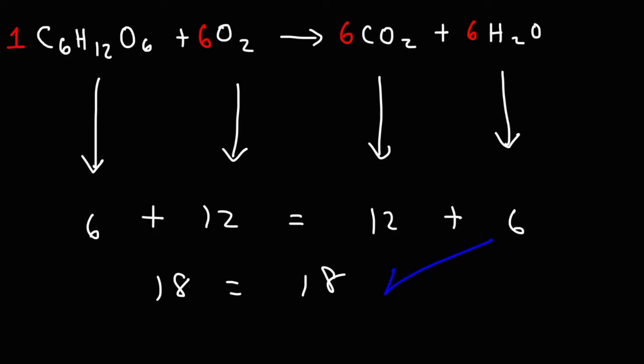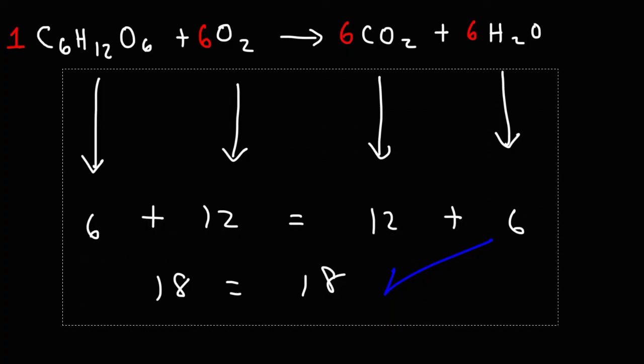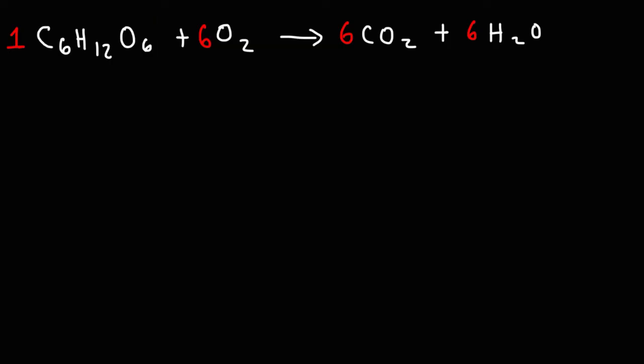That's one of the most effective ways to balance combustion reactions. First, balance the carbon atoms. Second, balance the hydrogen atoms. And then third, balance the oxygen atoms last. If you do it in that order, these type of problems you'll find are not so bad. That's how you can balance this particular combustion reaction associated with cellular respiration.